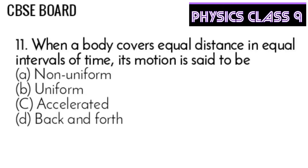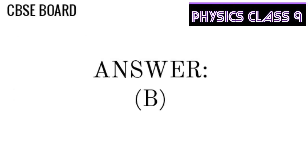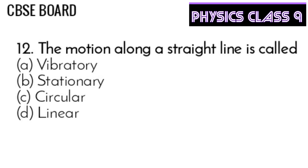Question 11: When a body covers equal distance in equal intervals of time, its motion is said to be non-uniform, uniform, accelerated, or back and forth. The answer is B — uniform motion.